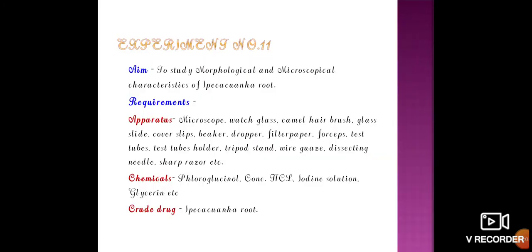The aim of this experiment is to study the morphological and microscopical characteristics of ipecacuanha root. For the requirements, we need apparatus including microscope, watch glass, camel hair brush, glass slides, cover slip, beaker, dropper, filter paper, forceps, test tubes, test tube holder, tripod stand, wire gauze, dissecting needle, and sharp razor.